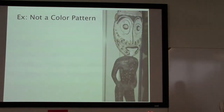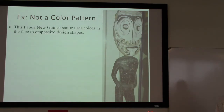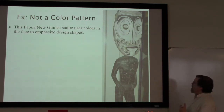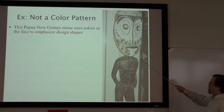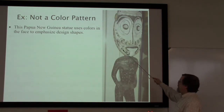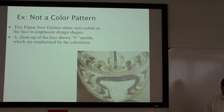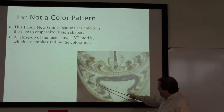To get an idea of what counts as a color pattern, it's useful to look at examples of things that don't qualify. This is a statue from Papua New Guinea using a variety of colors and these little v-shapes as a way of emphasizing particular design shapes. Since it's carved in wood, if they were not painted at all, or if they were all painted the same color, it would be difficult to see that those shapes were there.